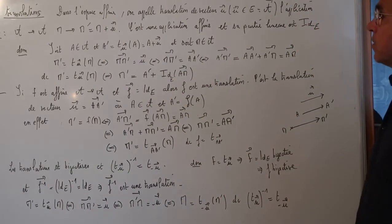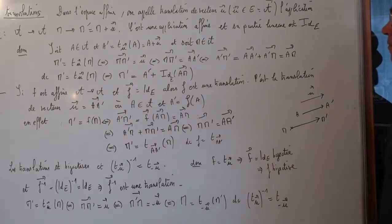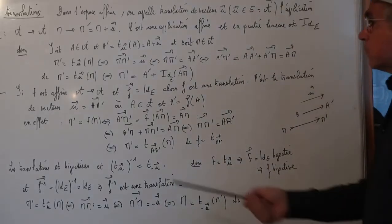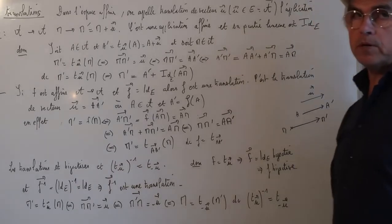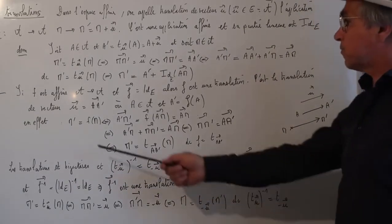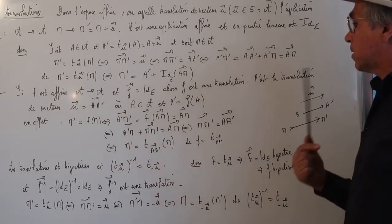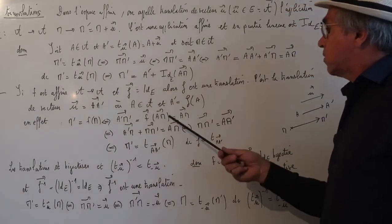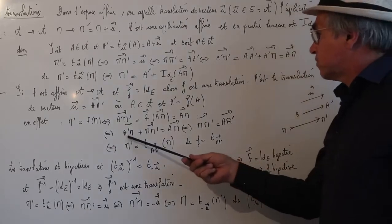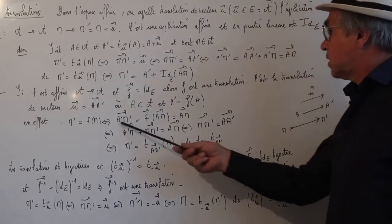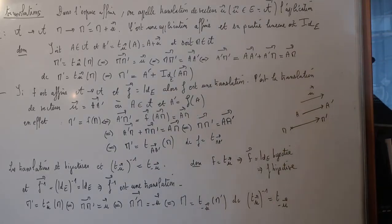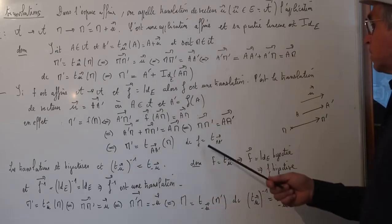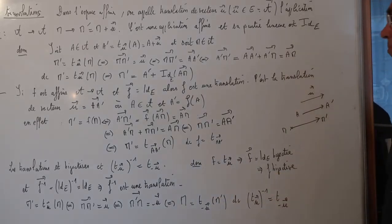Propriété : si F est affine et que sa partie linéaire est égale à l'identité de E, alors c'est une translation et c'est la translation de vecteur U égal à AA', où A' est l'image d'un point A quelconque. En effet, ça équivaut à dire que A'M' est égal à la partie linéaire de F appliquée en AM, c'est-à-dire AM. En utilisant Chasles, cela équivaut à dire que le vecteur MM' est égal à vecteur AA', autrement dit que M' est le translaté de M suivant le vecteur AA'. Donc F est bien la translation de vecteur AA'.